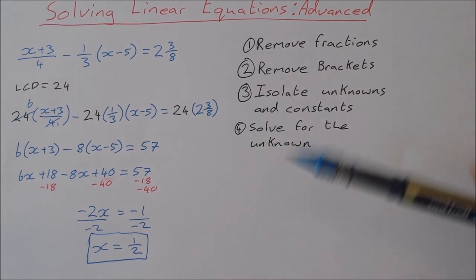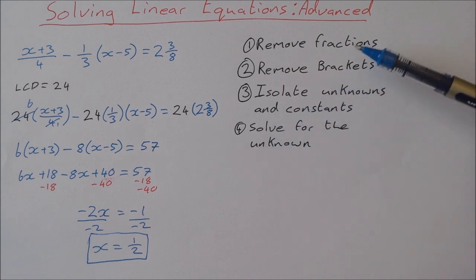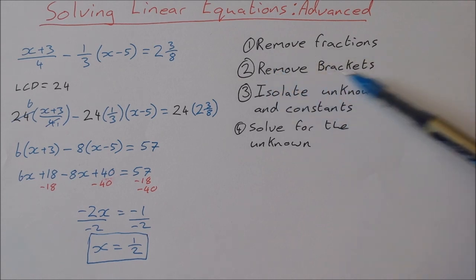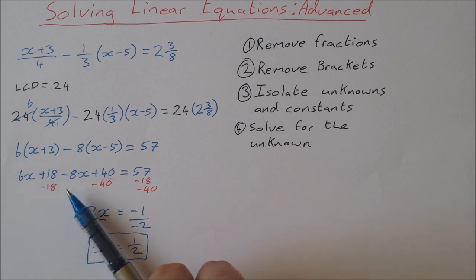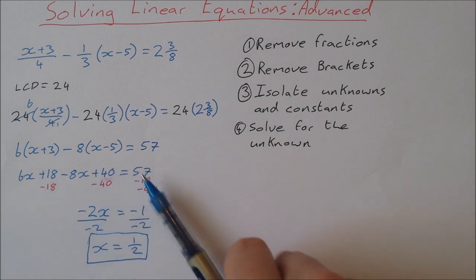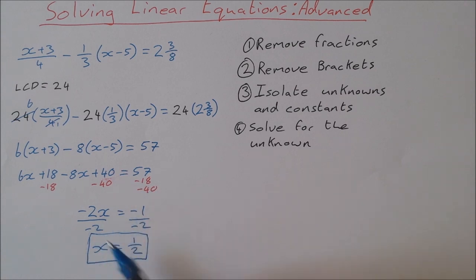Just to recap, the order that I like to do things in is first of all remove any fractions that I can. Then once I have that done, I remove any brackets by multiplying out. Then it's just a case of getting variables or unknowns to one side and constants to the other side and solving as normal.